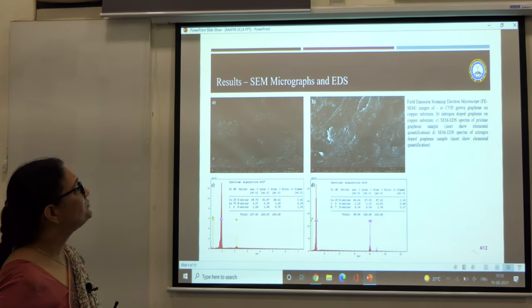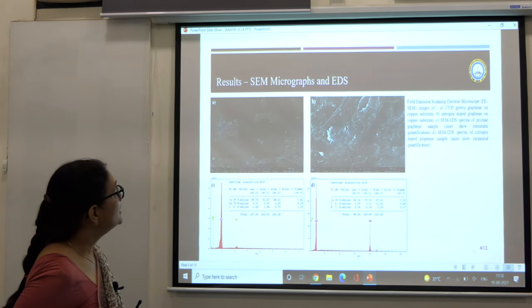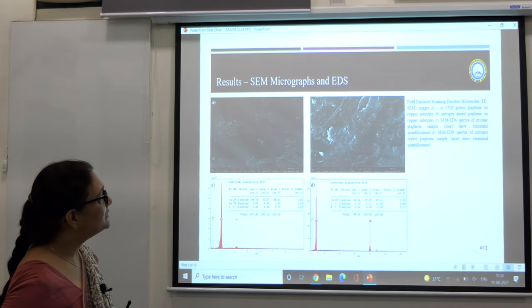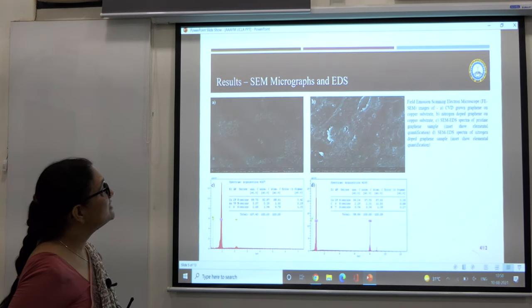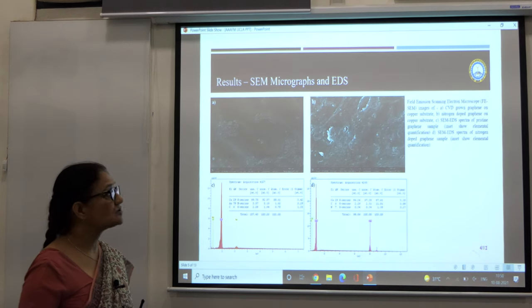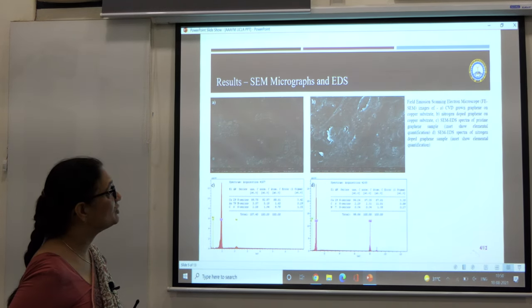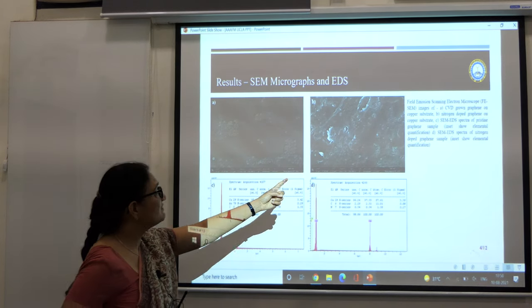After getting the sample, we use characterization techniques to verify and get information about these samples. This slide shows you the field emission scanning electron microscope images of the CVD grown graphene on the copper substrate.